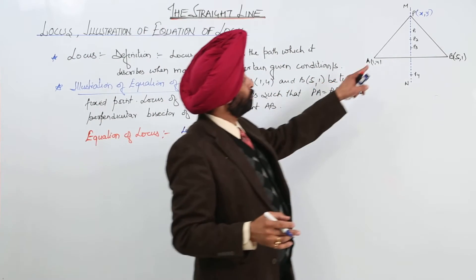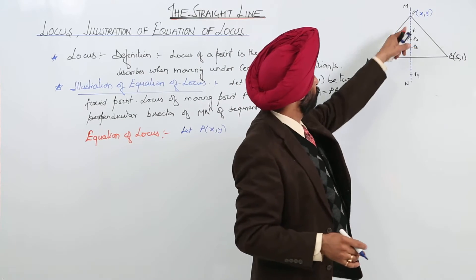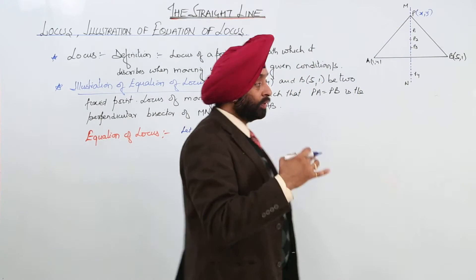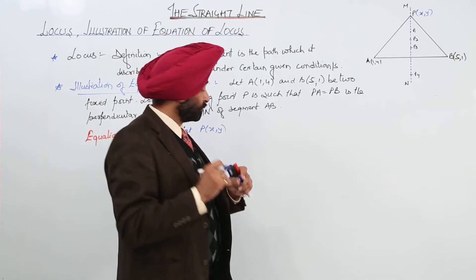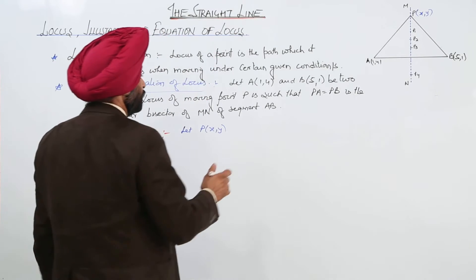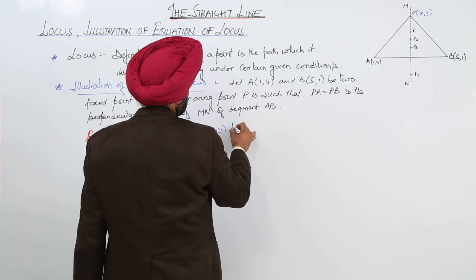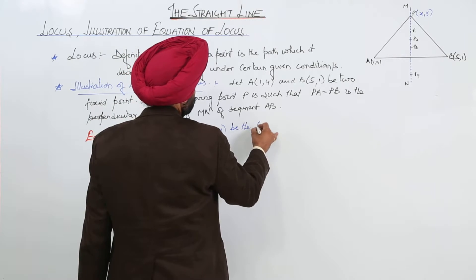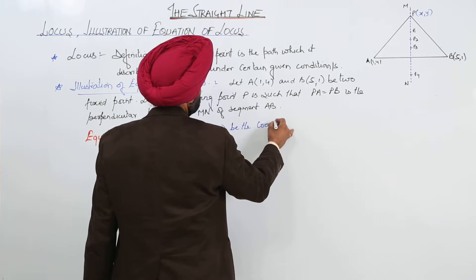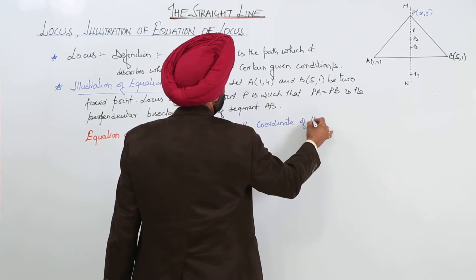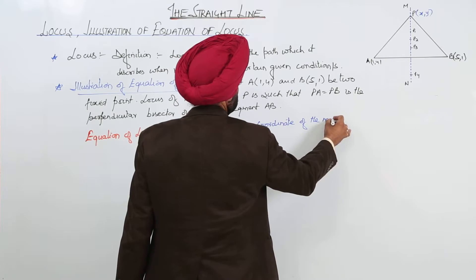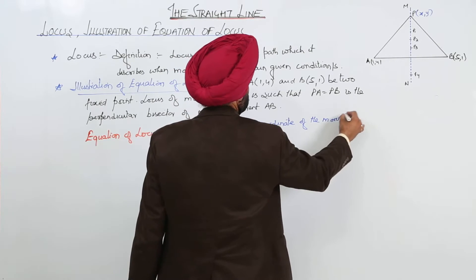Now, we are having coordinates for all the three parts, three vertices for a triangle: P, A and B. Now, what we are going to do? We are going to find PA is equal to PB by the distance formula. Now, let P (X, Y) be the coordinates of the moving point P.